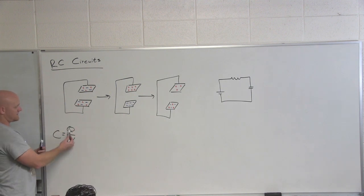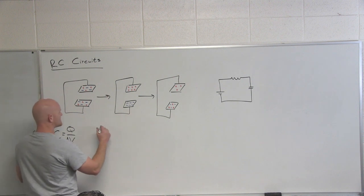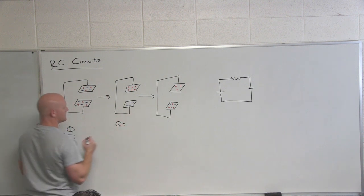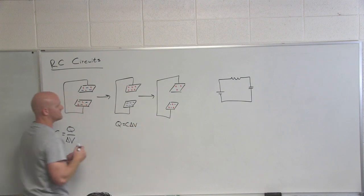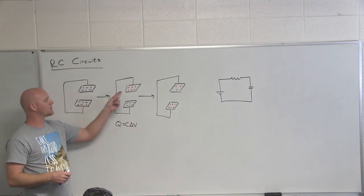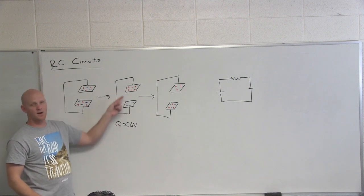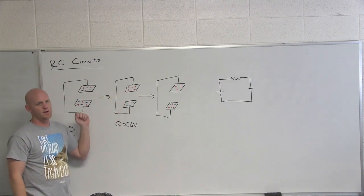They store charge, and the definition is Q over delta V, and so if you rearrange that, what is Q equal to? C delta V. And so eventually, what you're going to build up to is a total charge of C delta V on the plates of your capacitor over time.